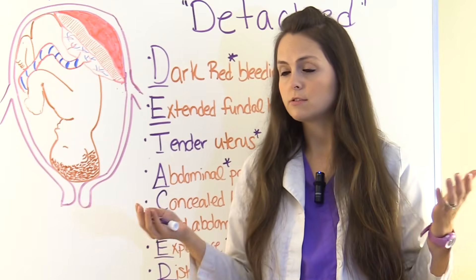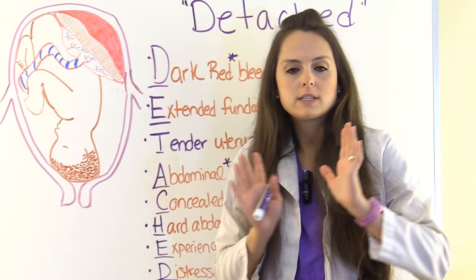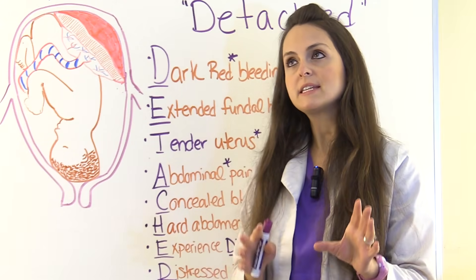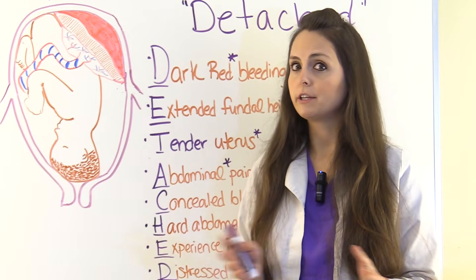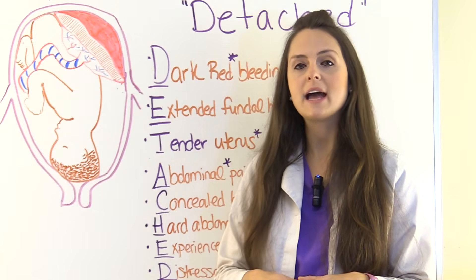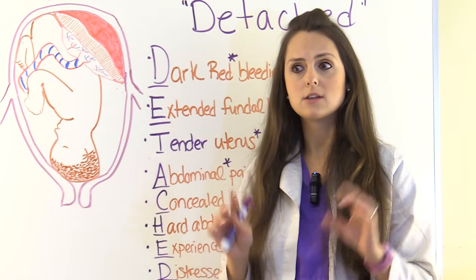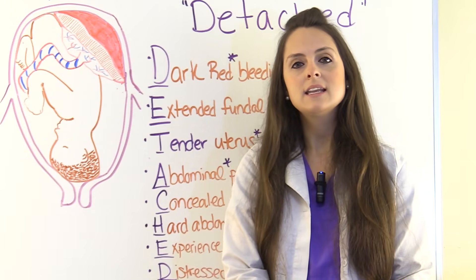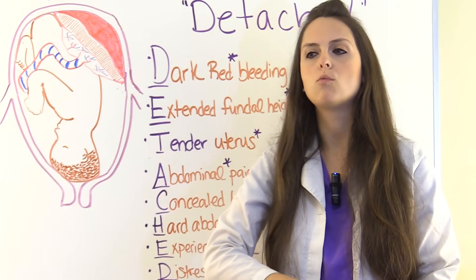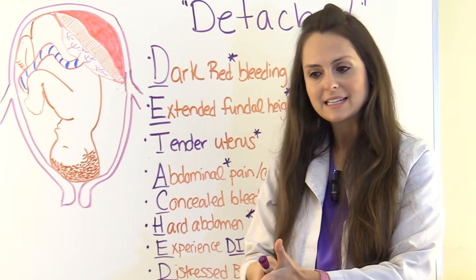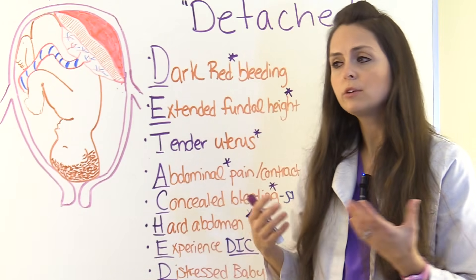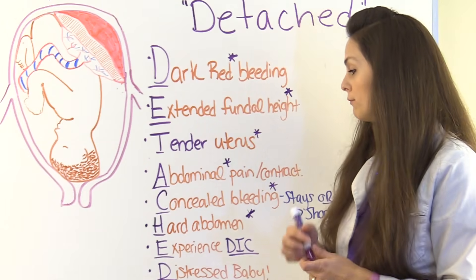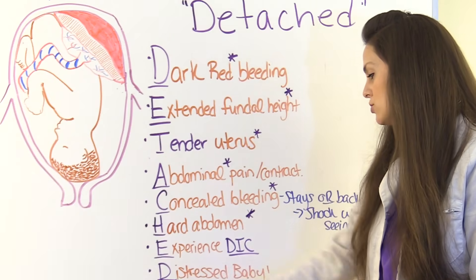These clots can obstruct major vessels — for example, clots going to the kidneys can cause renal failure. The body then attempts fibrinolysis to dissolve those clots, which further depletes clotting factors. Without clotting factors, the raw wound site where the placenta detached continues to bleed uncontrolled, and mom can bleed from any IV access site as well.